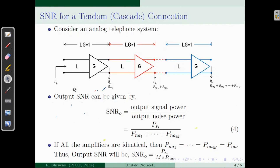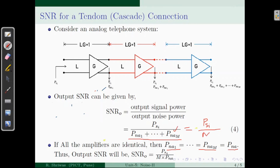If we assume all amplifiers are identical, then the internal noise of each amplifier is the same, say PNA. In that case, the denominator becomes M times PNA, since we are adding M identical noise terms. So the output signal to noise ratio simplifies to PSI divided by M times PNA — input signal power divided by M multiplied by the internal noise of one amplifier.